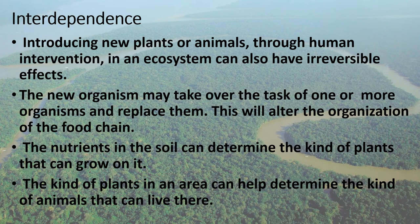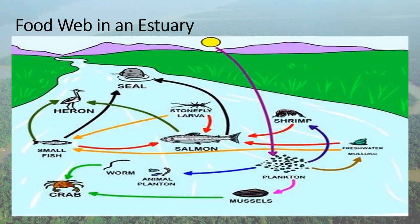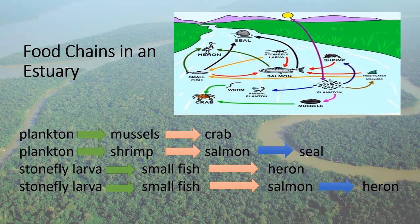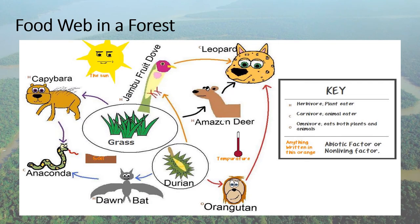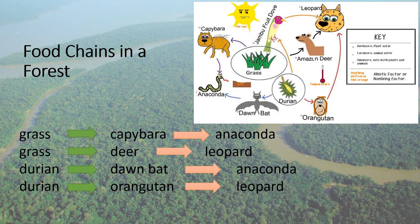The nutrients in the soil can determine the kind of plants that can grow on it, and the kind of plants in an area can help determine the kind of animals that can live there. This is an example of a food web found in an estuary, and these are examples of food chains from that food web. This is also an example of a food web in a forest, and these are some of the food chains found in the given food web.